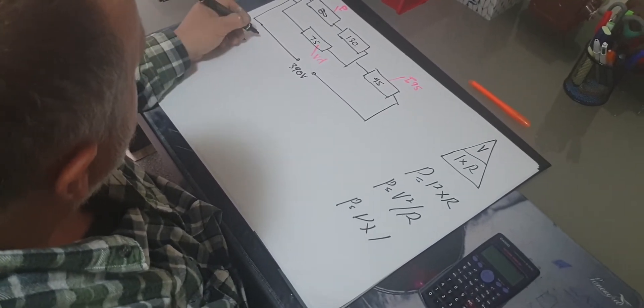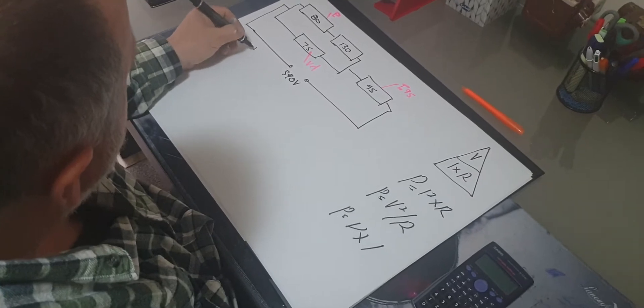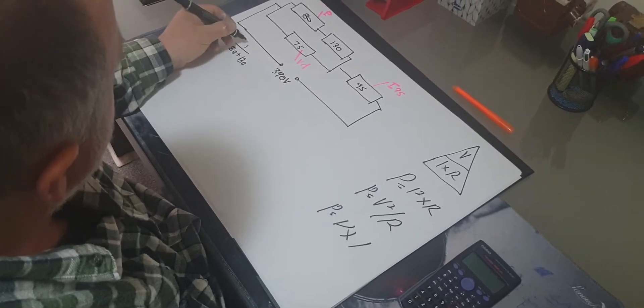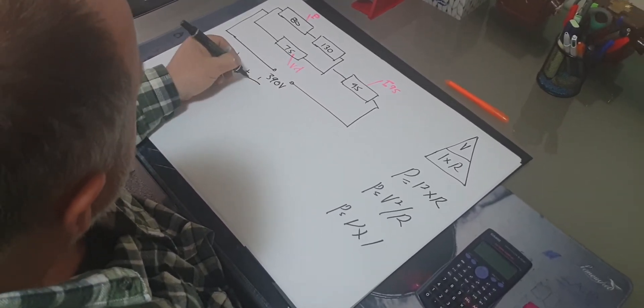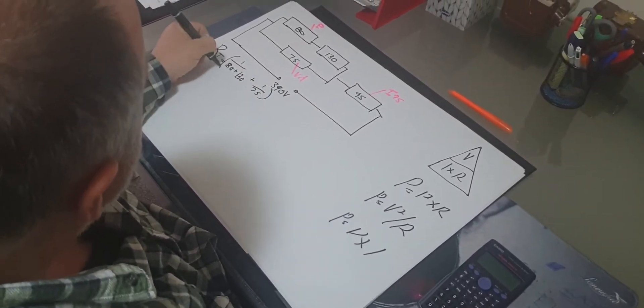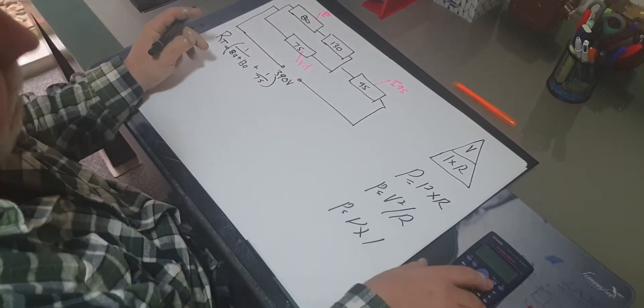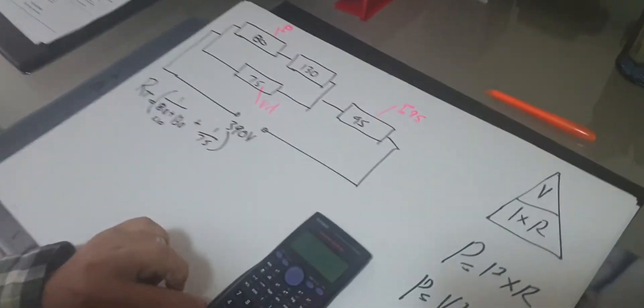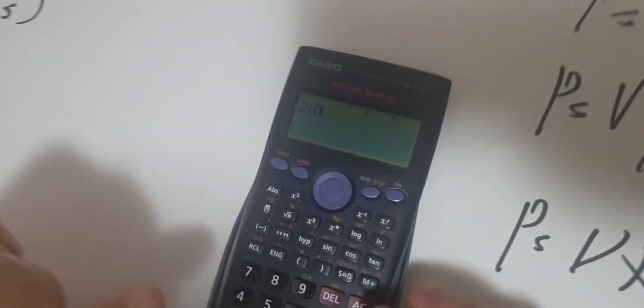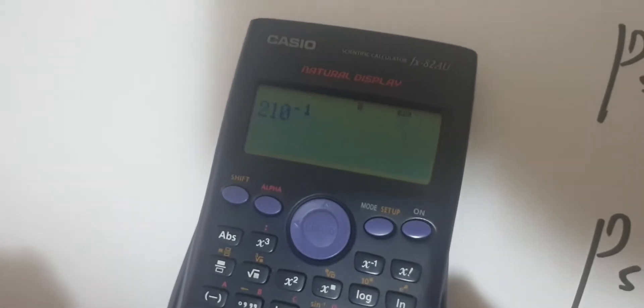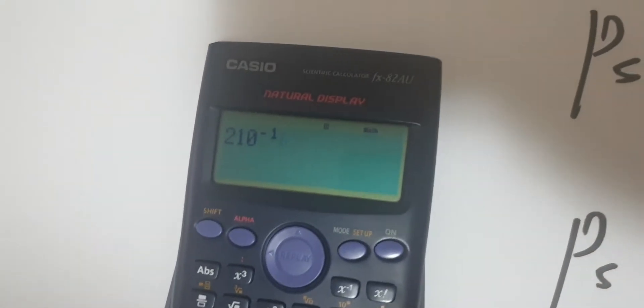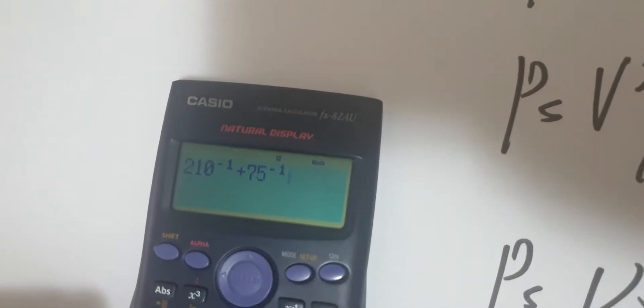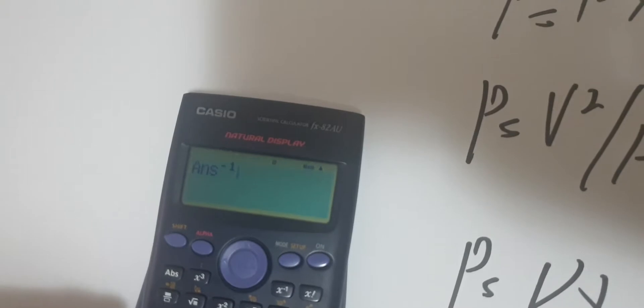So the first thing I need to do is resistance total. So what I'm going to do is we're going to do one over 80 plus the 130, and then plus one over 75. So the first thing we need to do is 80 plus 130 equals 210. So the first thing we're going to do is going to do 210 over the one.